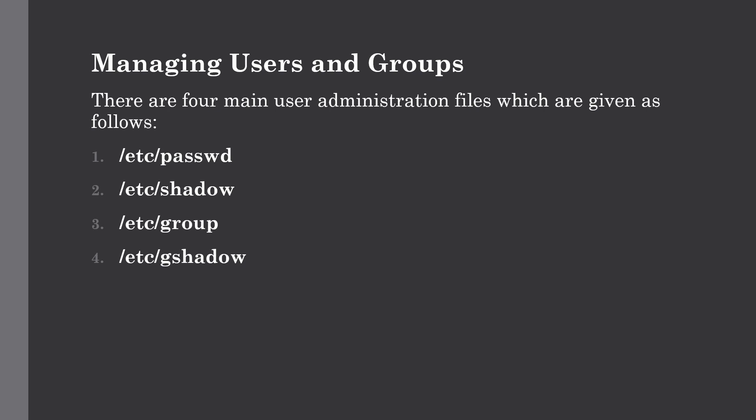The first file is the password file, which keeps user account and password information. It is very sensitive and important — only the root account can have access to it, and it holds the majority of information about the accounts on the Unix system. The shadow file holds the encrypted passwords for corresponding accounts; note that not all systems support this file. The group file contains the group information for each account, and gshadow contains secure group account information.